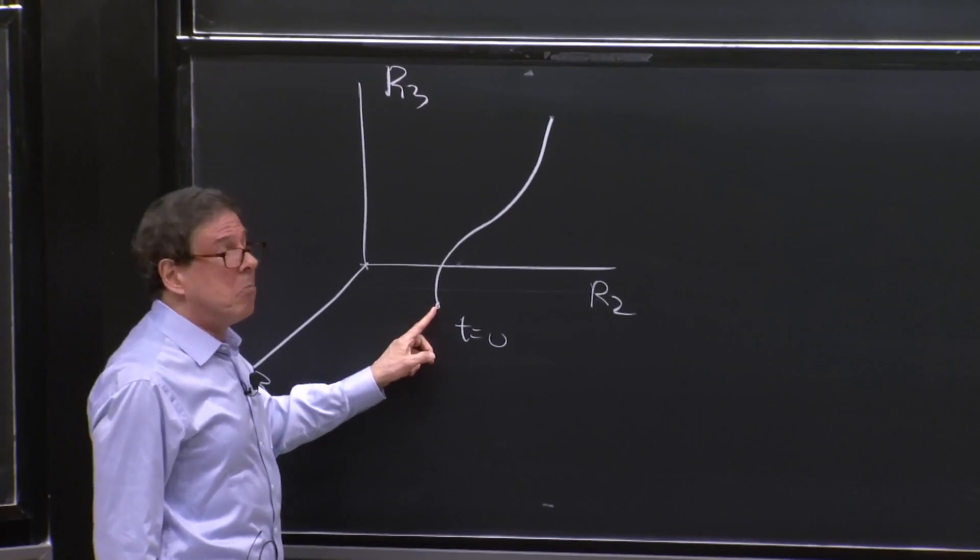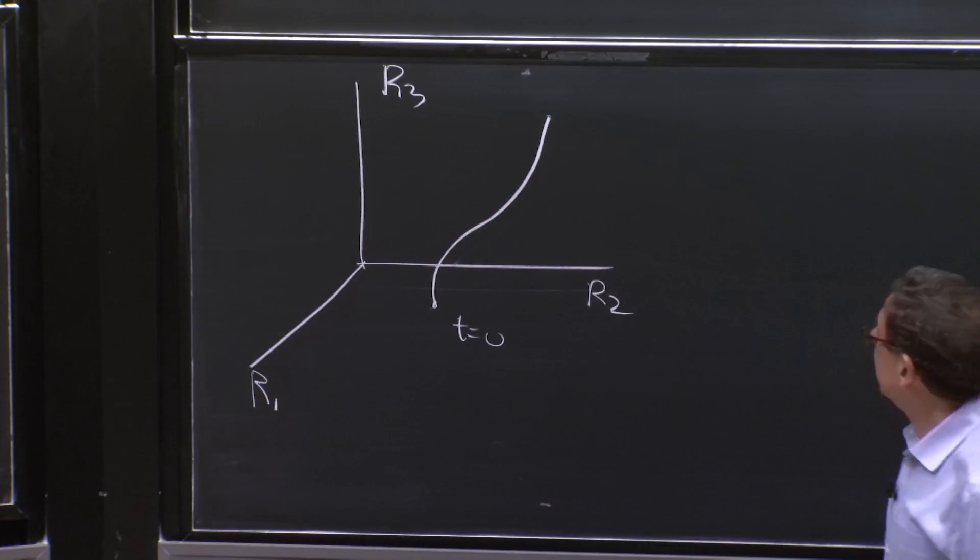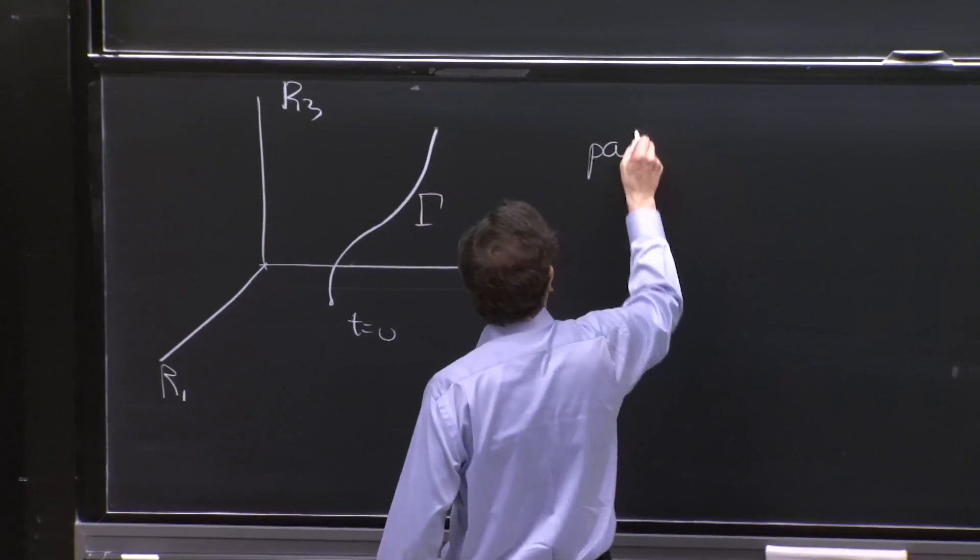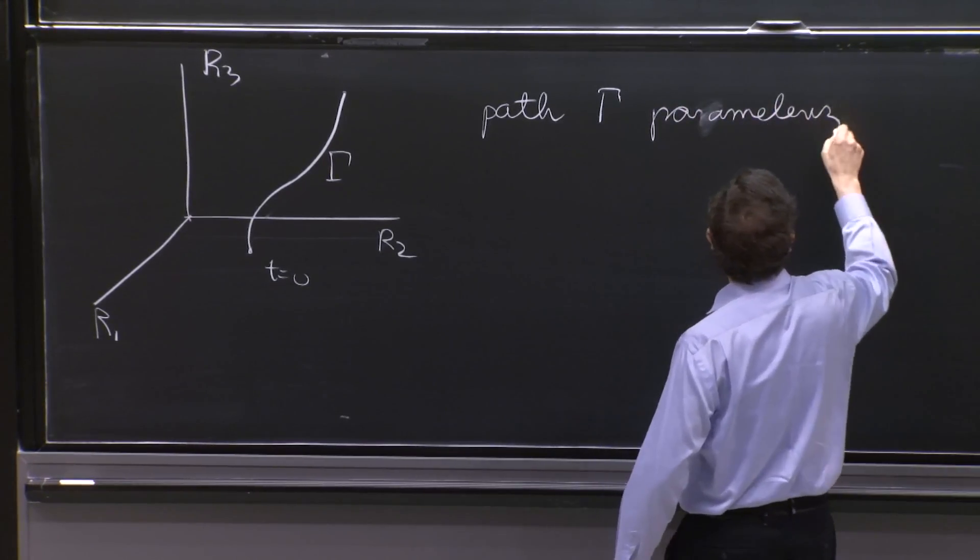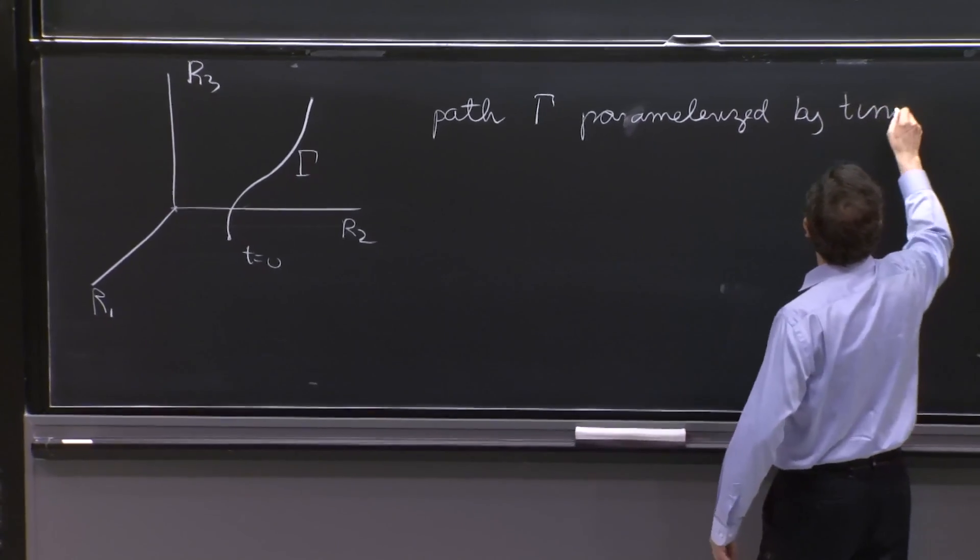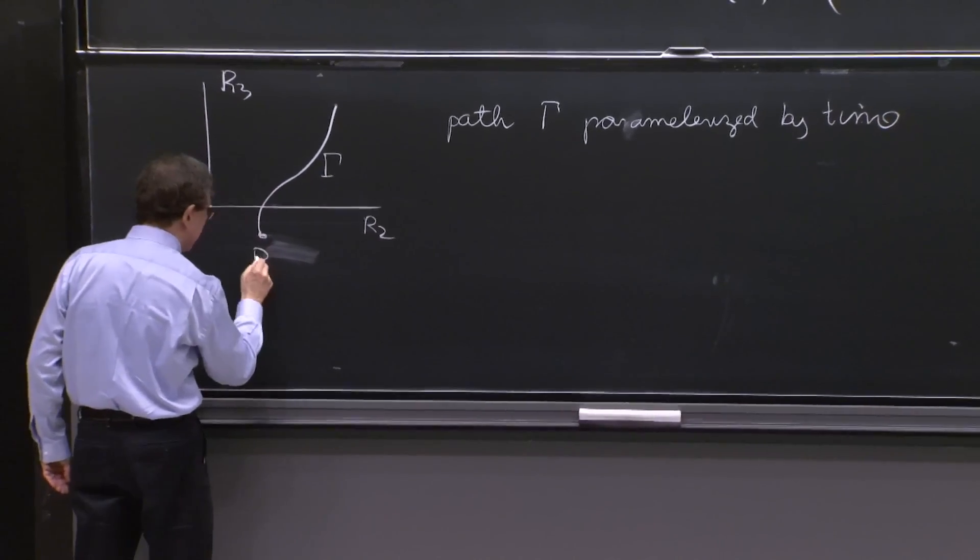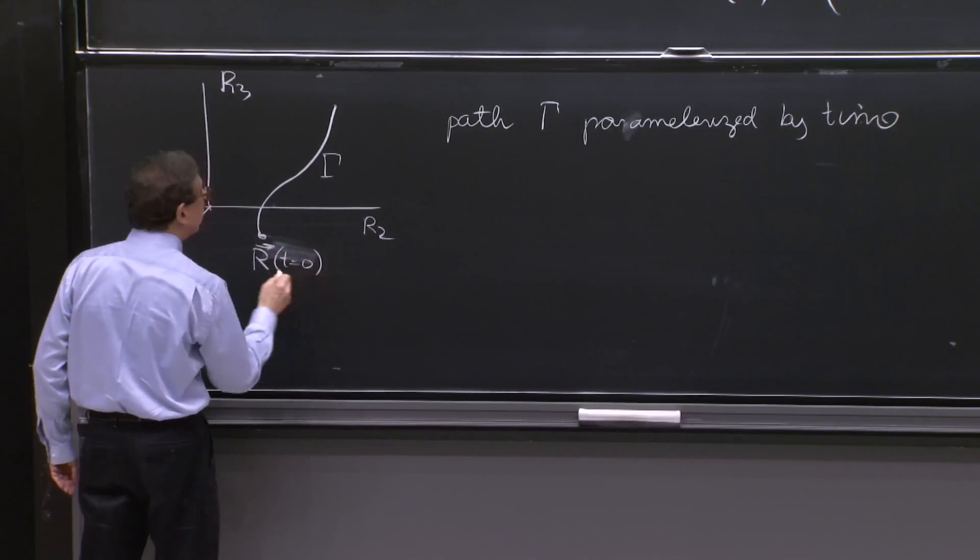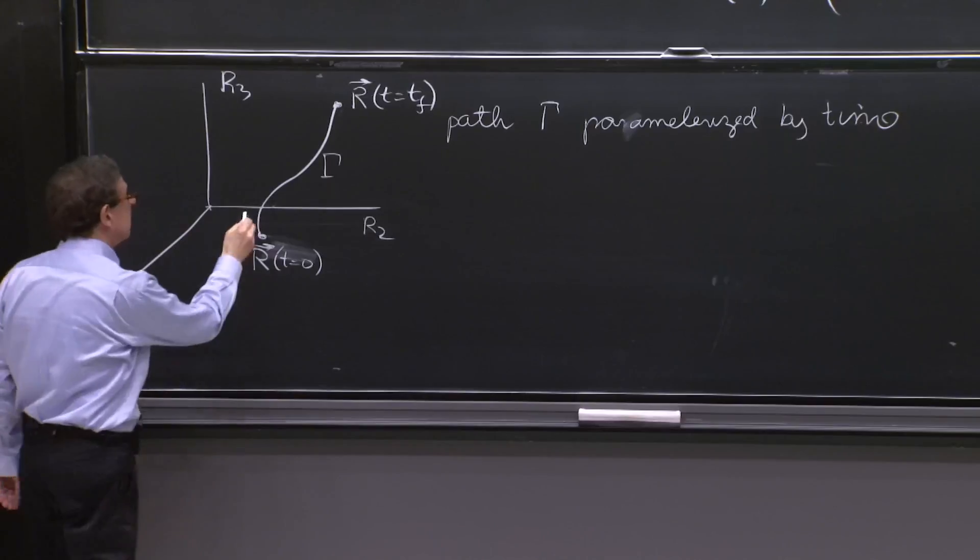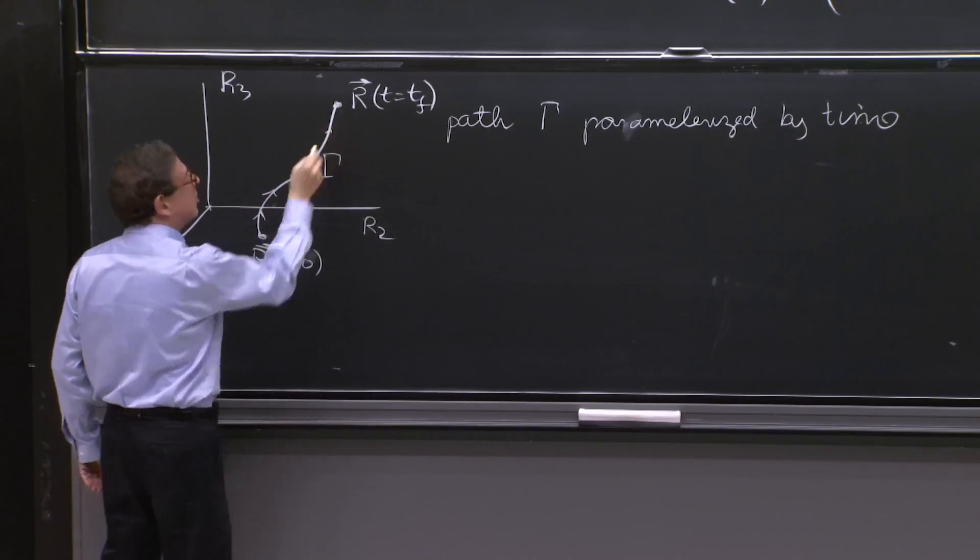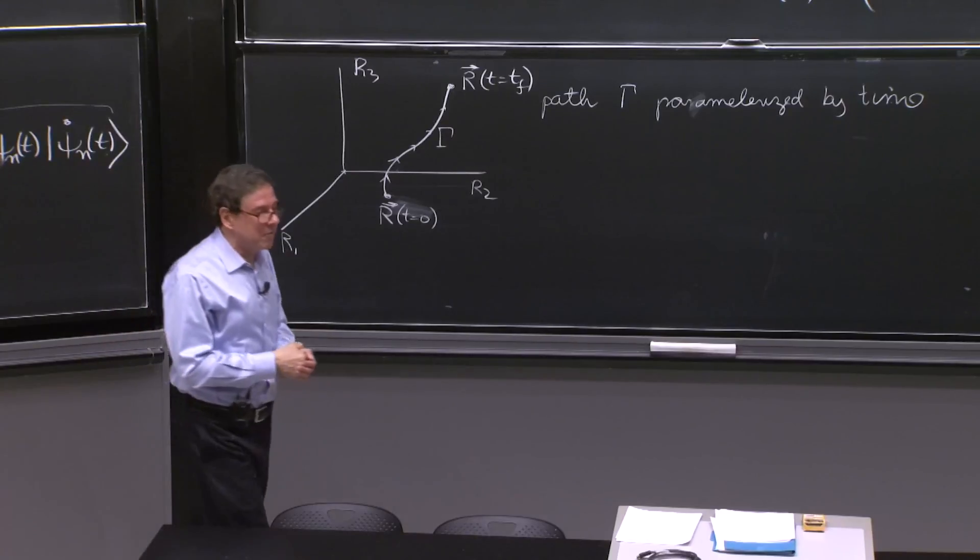As time goes by, the corn is changing time. And this is a line parameterized by time. So path gamma parameterized by time. And that represents the evolution of your system. And this could be, at time equals 0, this point could be r at t equals 0. And maybe this point is r at t equal t final. And the system is going like that. You should imagine the system as traveling in that configuration space. That's what it does. That's why we put the configuration space.